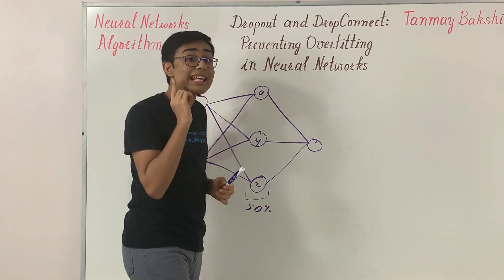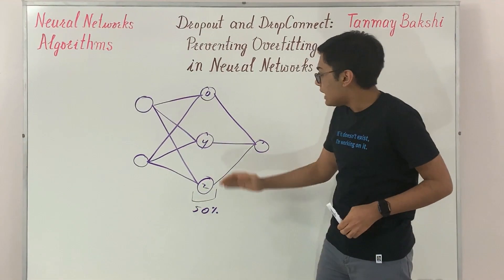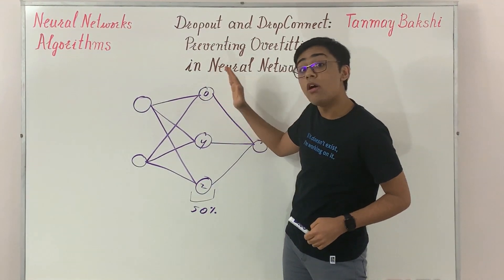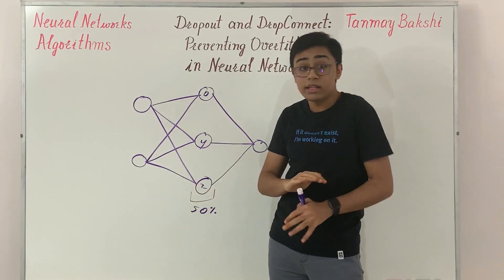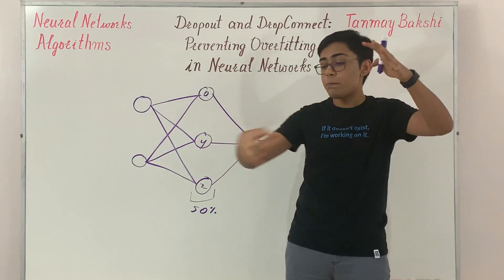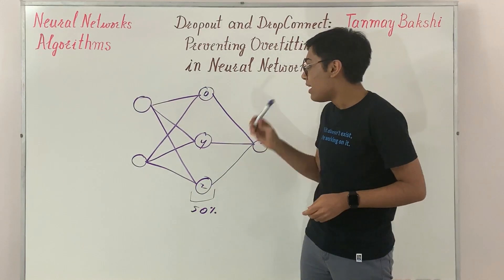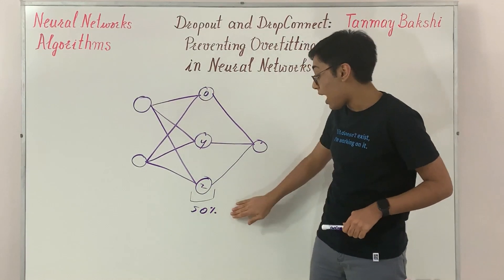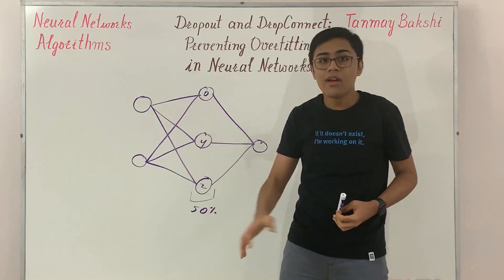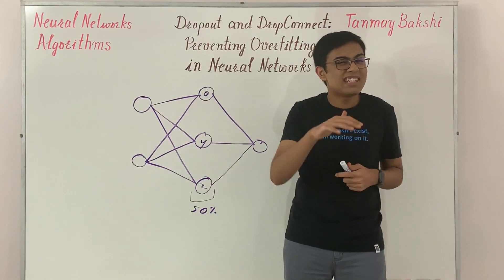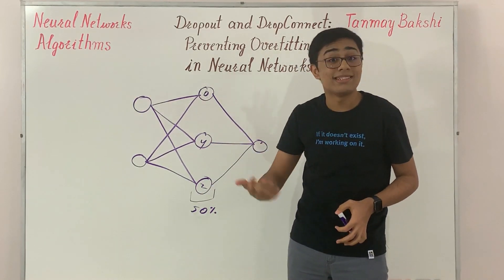Setting a neuron's value to zero means it doesn't contribute anything for that training step. This forces the neural network to say: even if this input isn't available, I can still make a decision by looking at other neurons. There's no pattern to how dropout works — it's random, forcing the network to create new pathways for classification or regression. You can have aggressive dropout at 70% or minimal dropout around 10%.